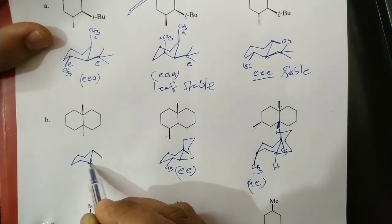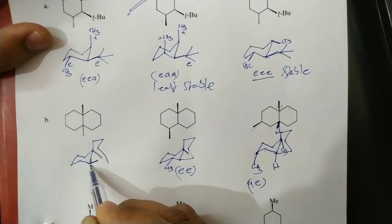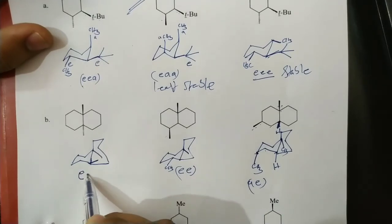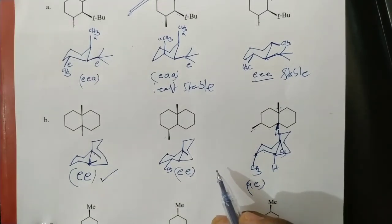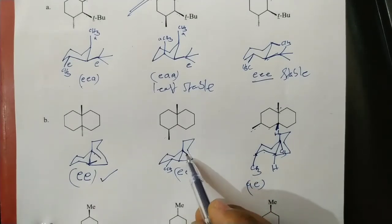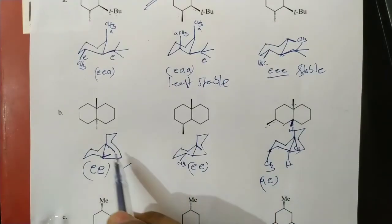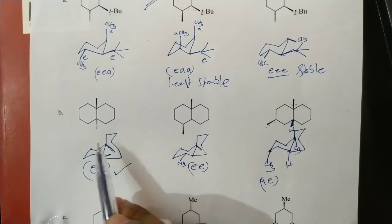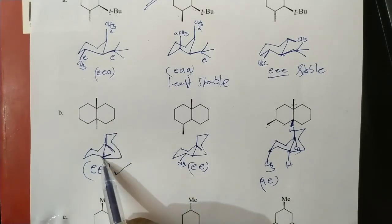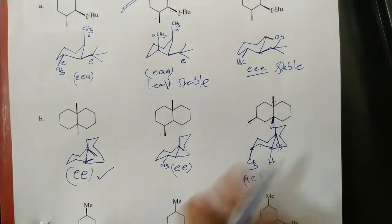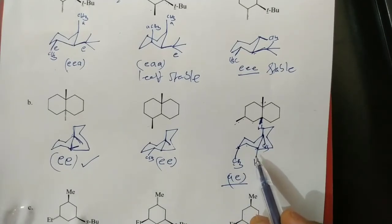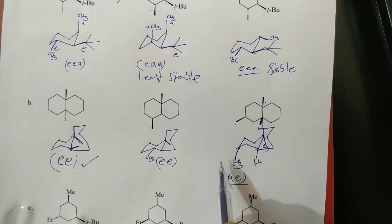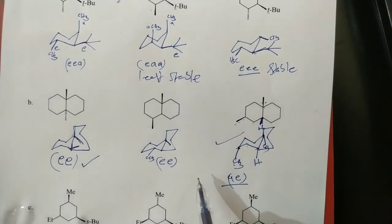For the trans isomer: methyl downward, the other methyl upward. After drawing the conformation, both methyls are equatorial — this is the most stable compound. For the other case, equatorial and equatorial, but upon checking the direction it is actually trans — equatorial, equatorial for one and axial, equatorial for the other. Since both methyls are not in equatorial positions, this is the least stable among the three compounds and has the highest heat of combustion.